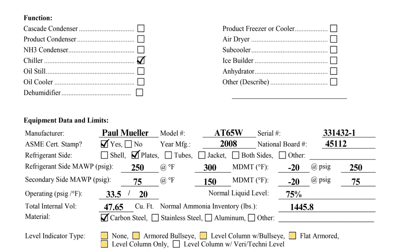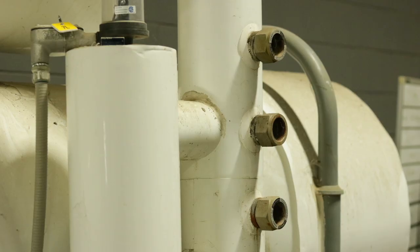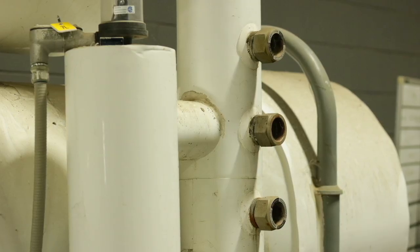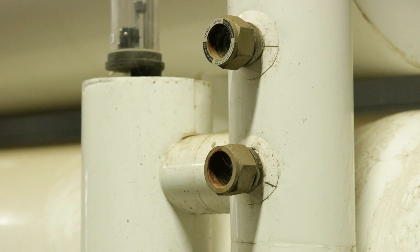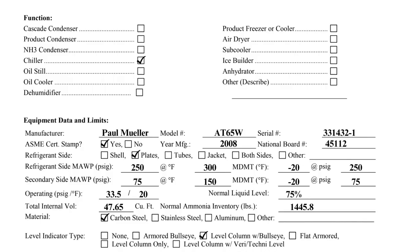Most heat exchangers have a level indicator on the supplying vessel. In this example, the heat exchanger has a level column with bullseye, so that box would be checked.